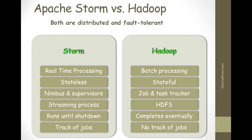This table describes exactly the differences between Storm and Hadoop. Storm is good for real-time processing and Hadoop is good for batch processing, meaning processing a group of messages at a time. Storm is stateless, which is why Storm uses Apache Zookeeper, while Hadoop is stateful.